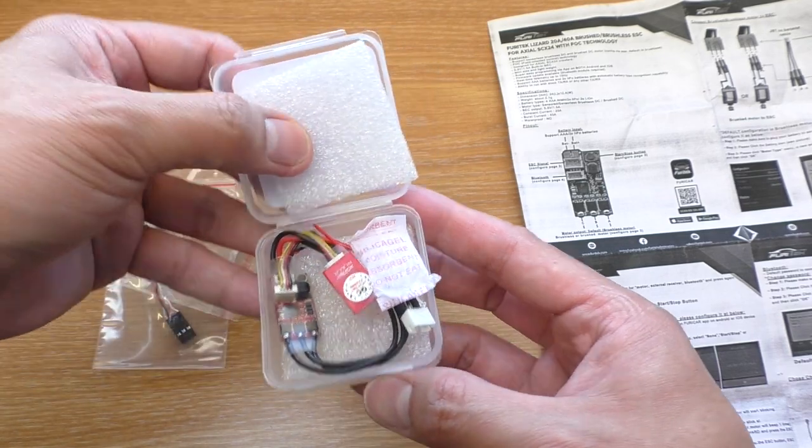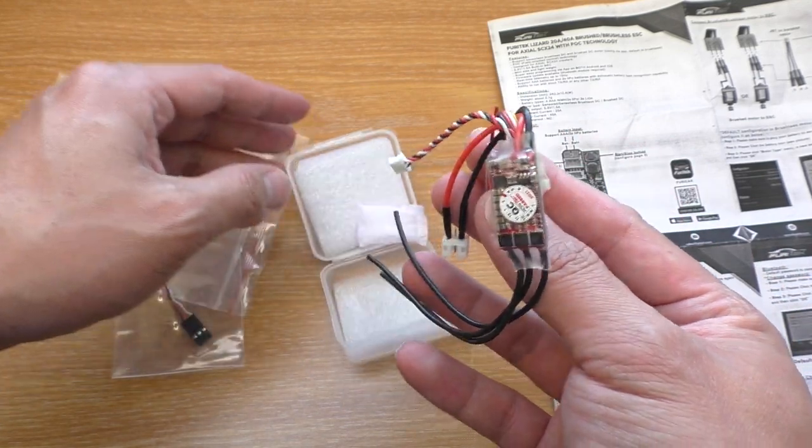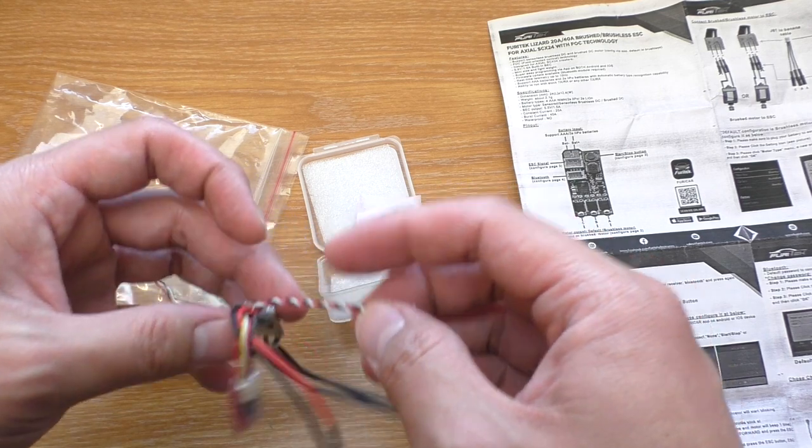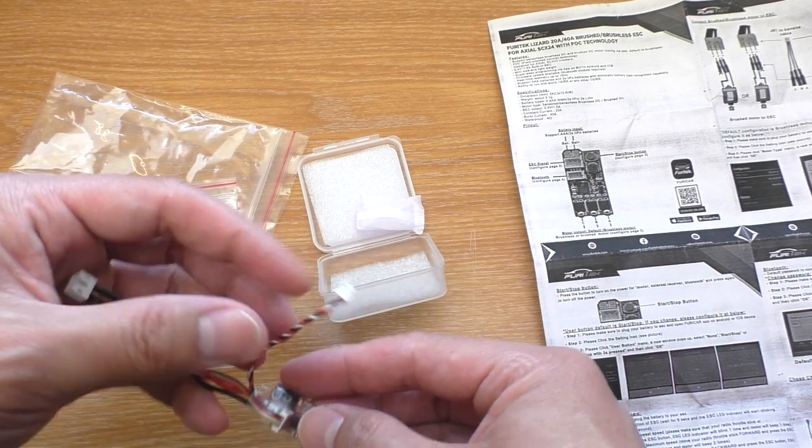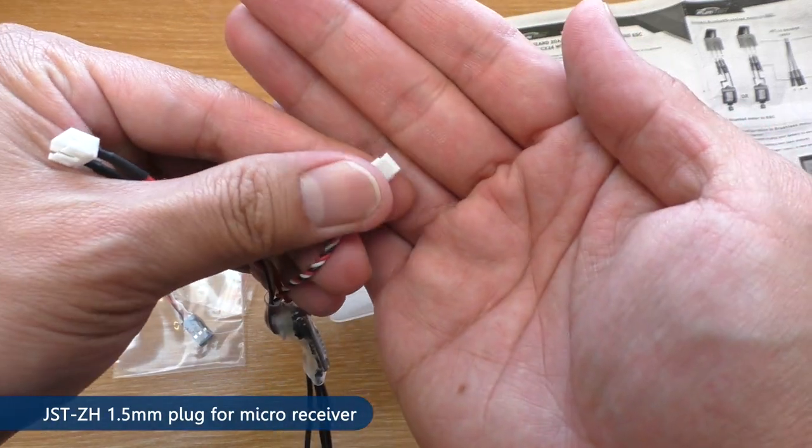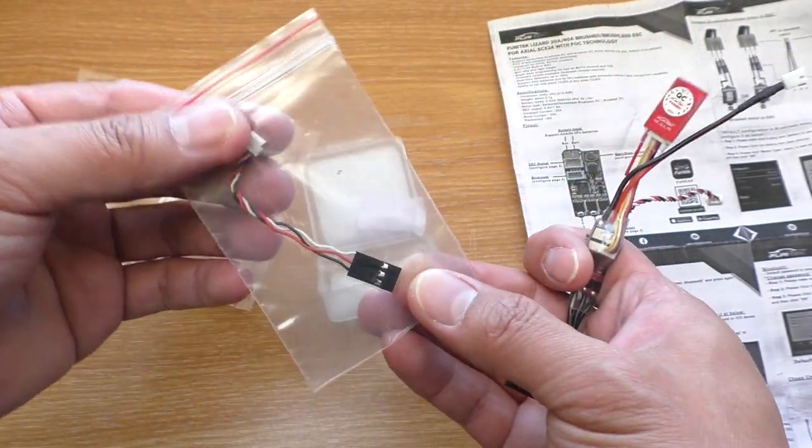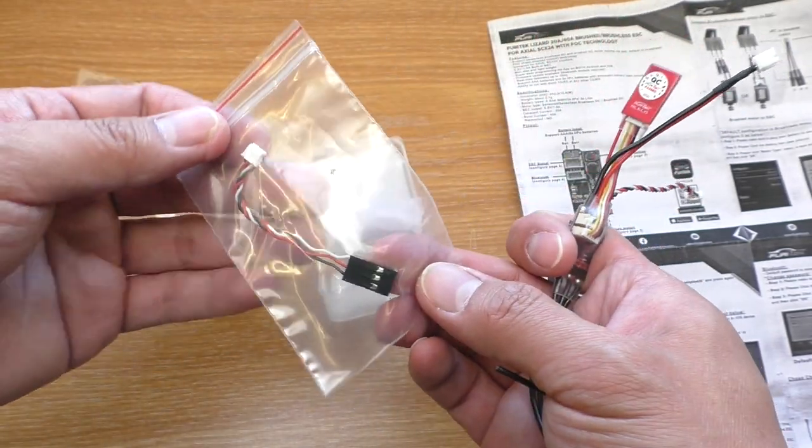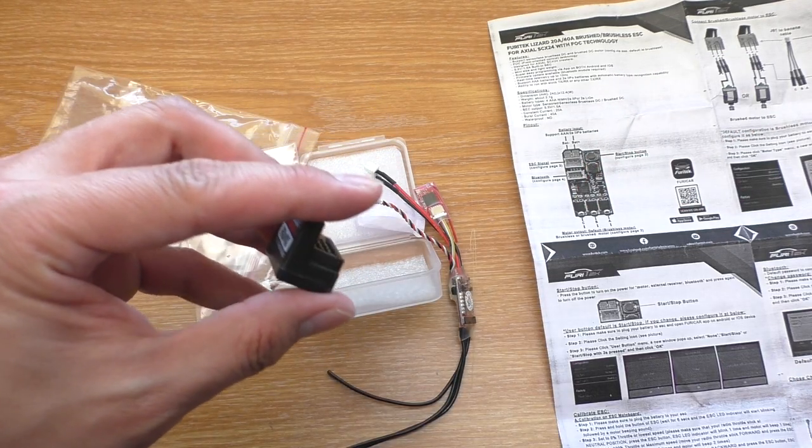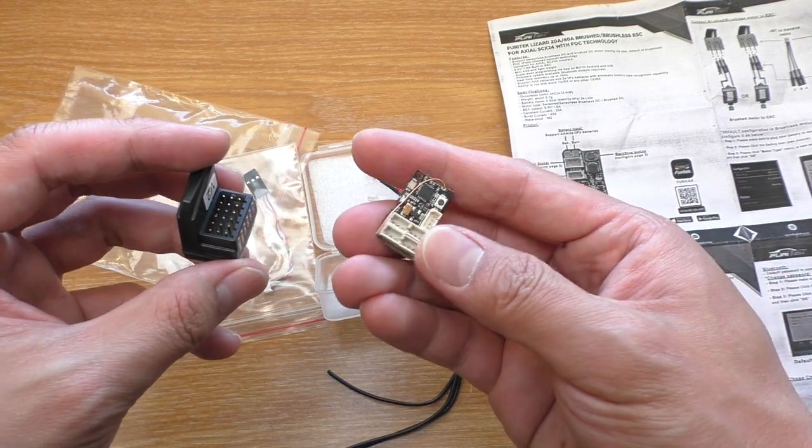Inside we have the ESC and the Bluetooth module. It comes pre-installed with the plug for micro receiver, and because it comes with the plug for standard receiver as well, it comes ready to use with a standard receiver like this or a micro receiver like this. Both are viable options for you.